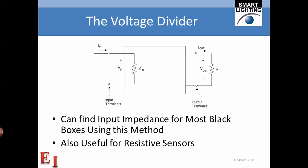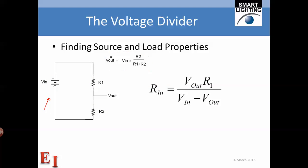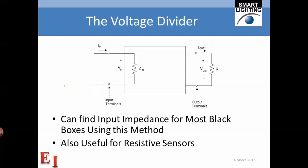If we want to find out what the input impedance Zin is, as long as everything else is known we can determine it. If we have some kind of a black box, it does not even matter what is inside — we can find out what Zin is for that black box by making the same kind of measurement.